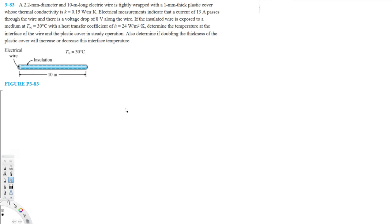This problem involves a 2.2 millimeter diameter, 10 meter long electric wire tightly wrapped with a 1 millimeter thick plastic cover whose thermal conductivity is k = 0.15 W/m·K. Electrical measurements indicate a current of 13 amperes passes through the wire with a voltage drop of 8 volts. The insulated wire is exposed to a surrounding temperature of 30°C with a heat transfer coefficient h = 24 W/m²·K. We need to find the temperature at the interface of the wire and the plastic cover, and determine if doubling the plastic cover thickness increases or decreases that interface temperature.